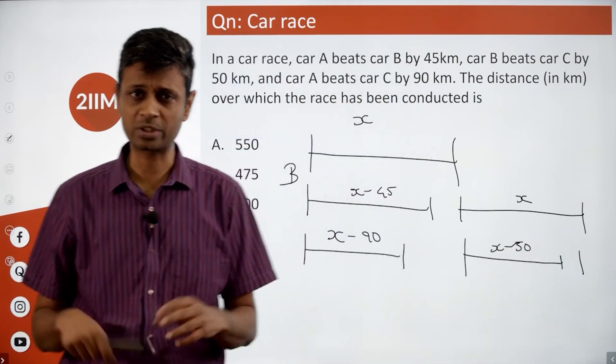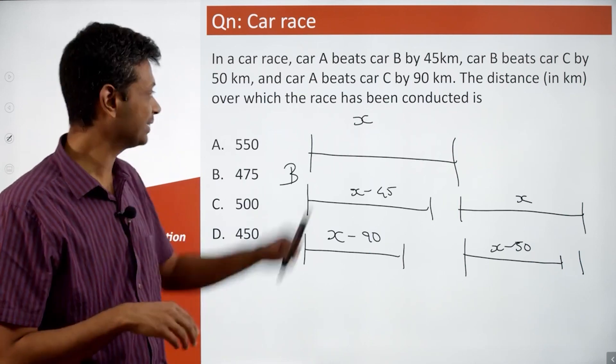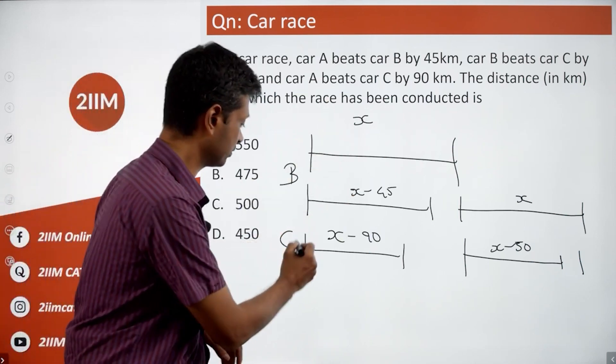Very interesting, that becomes a classic ratios question. The first context: when A does X, B does X minus 45, C does X minus 90.